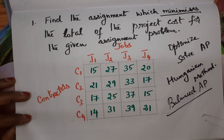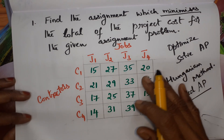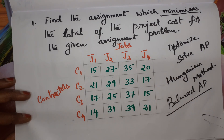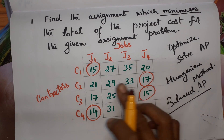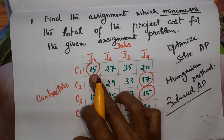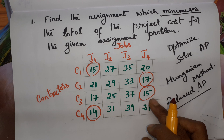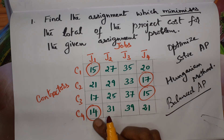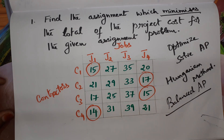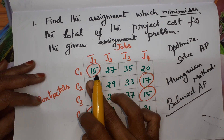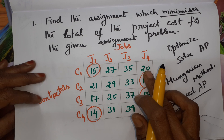Now we move on to the next step. In every row, first we have to start row-wise. We have to locate the least element in every row, and that least element has to be subtracted from all the other entries. These are the least elements in every row: 15 is the minimum in the first row, 17 minimum in the second row, 15 minimum in the third row, and 14 minimum in the fourth row. We have to subtract — for example, starting with the first row, we subtract 15 from all the entries.